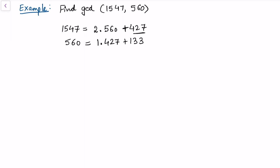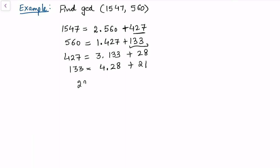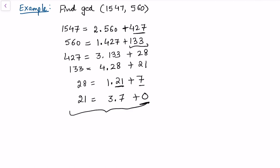Continuing: 560 = 1×427 + 133, then 427 = 3×133 + 28, then 133 = 4×28 + 21, then 28 = 1×21 + 7, and finally 21 = 3×7 + 0. Since the last remainder is now zero, we stop the Euclidean algorithm. The last divisor tells us the GCD of 1547 and 560 is equal to 7.